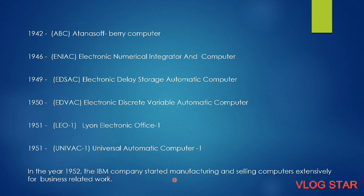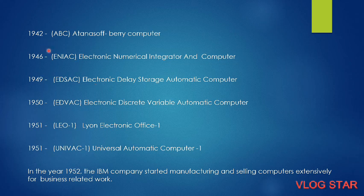In 1951, LEO 1 — Lyons Electronic Office 1 — arrived. Also in 1951, UNIVAC 1 — Universal Automatic Computer 1. And in 1952, IBM started manufacturing computers for business purposes to complete business-related tasks. Computers became very widely used, and improved versions are now used everywhere.